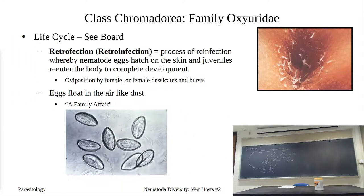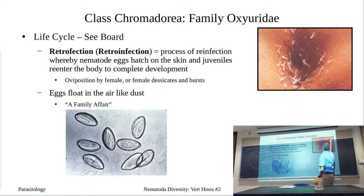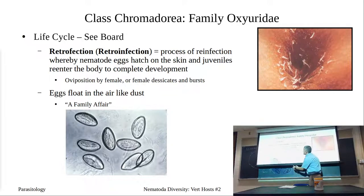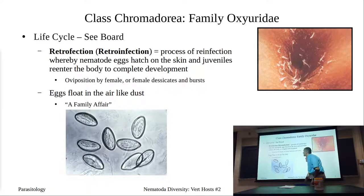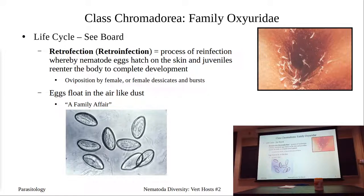Retrofection is the process where nematode eggs hatch on the skin and the juveniles re-enter the body to complete development. The J3s go back in, or the female leaves the host, oviposits the eggs, then dies, dries out, bursts, and all the eggs in the uterus have a chance to develop.